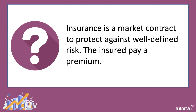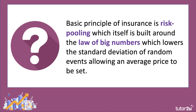What is insurance? Insurance is essentially a market contract to protect against well-defined risk — you're buying a service, being insured against risk, and the insured pay a premium for doing so. The basic principle of insurance is risk pooling. Insurance companies don't just identify the risk of any one person — too time-consuming and costly. Instead, they build risk pooling around the law of large numbers: with enough data points, that brings down the standard deviation of a random event, allowing an average price to be set.